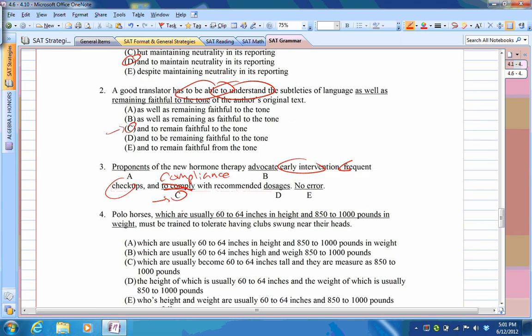Polar horses, which are usually 60 to 64 inches in height and they are 50 to 2,000 pounds in weight. Notice how they say in height, in weight. And they say some number to some number, some number to some number. In that case, it's going to be A. Everything's fine there because it has the parallel structure.